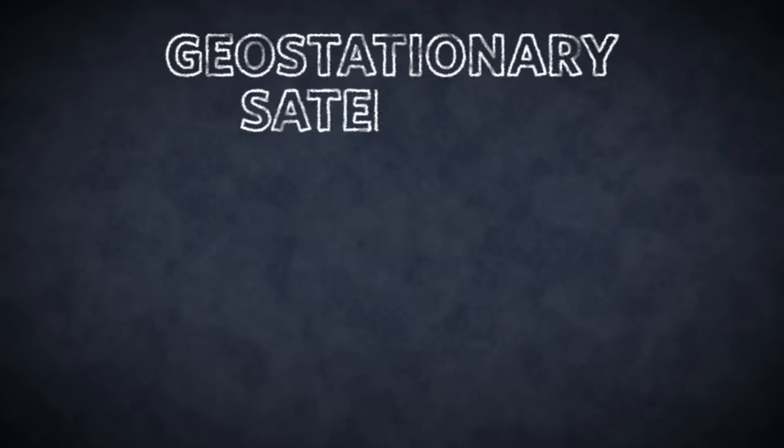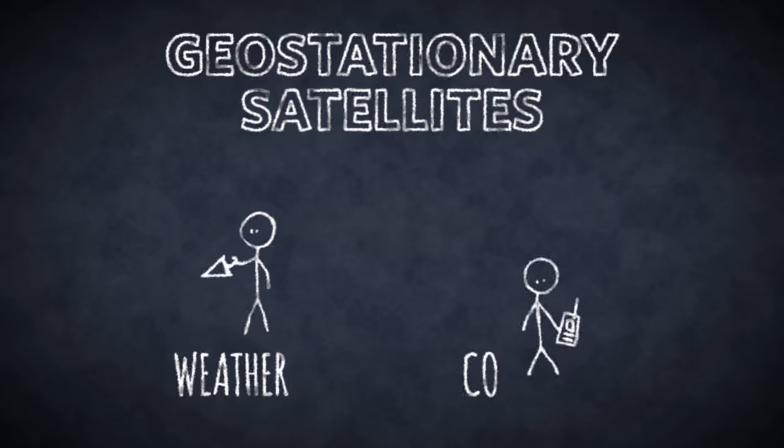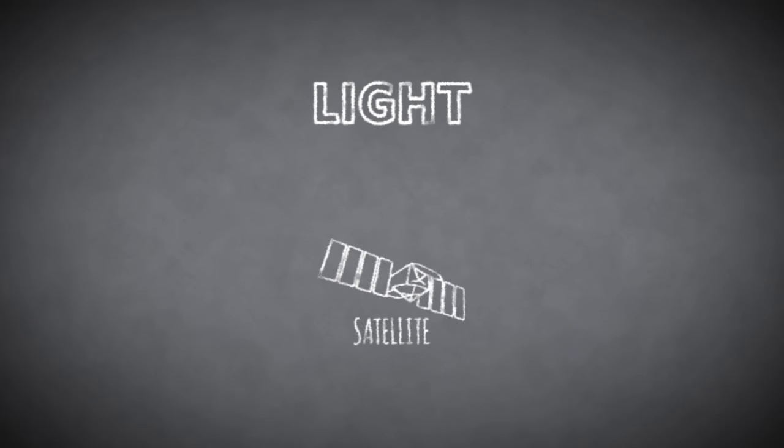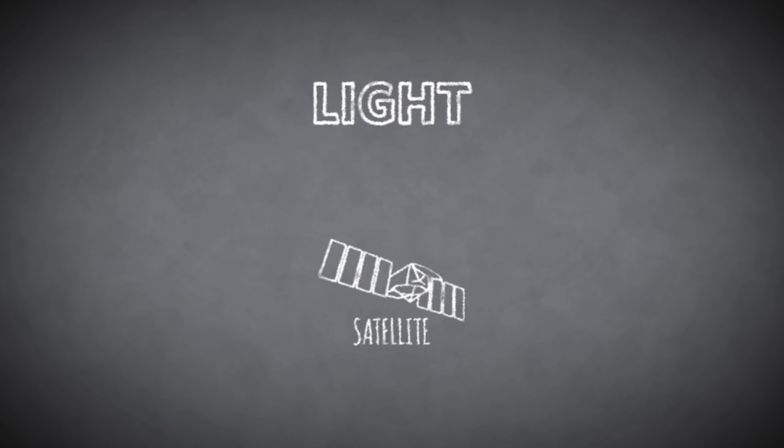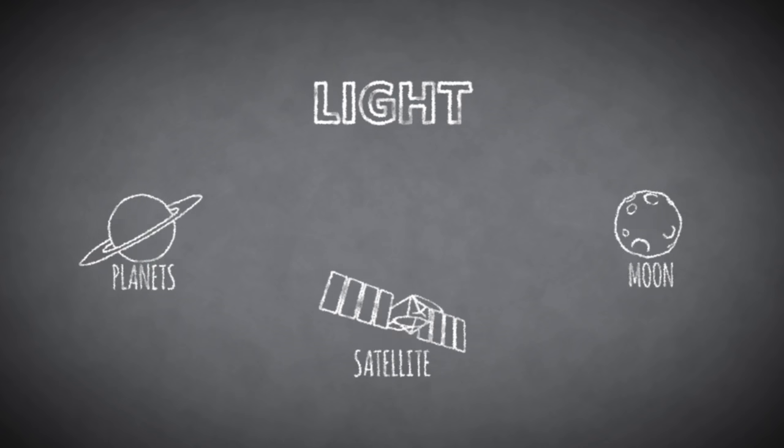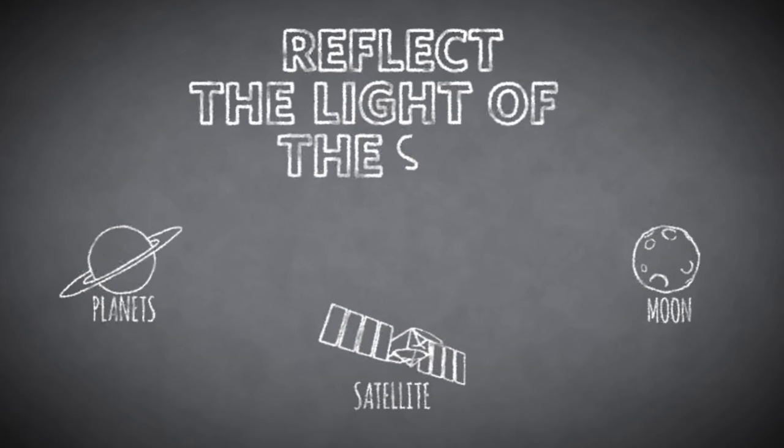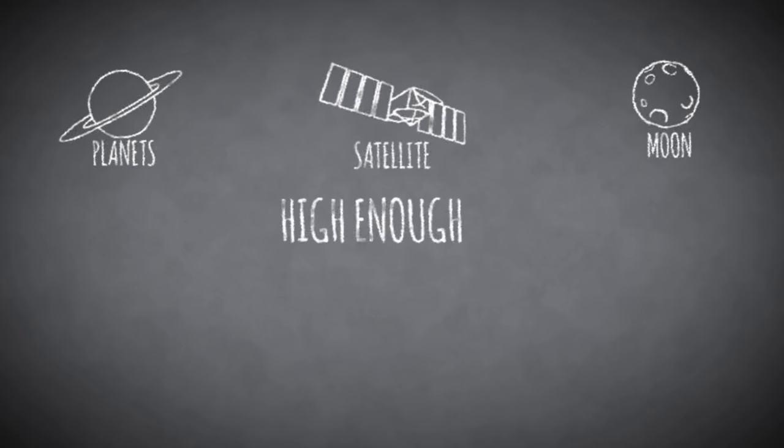Because of this, each satellite keeps pace with the same point on the ground and appears to be standing still in the sky. Examples of satellites in geostationary orbits are those used in weather monitoring and communication. The light you see coming from a satellite is the same light you see when you look at planets or at the moon.